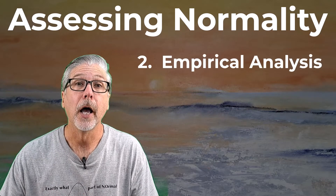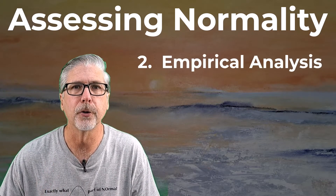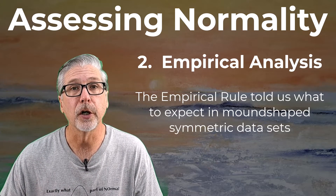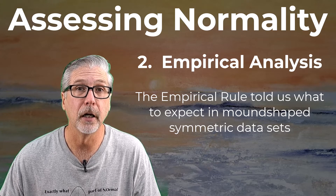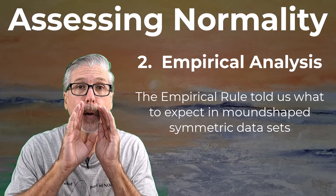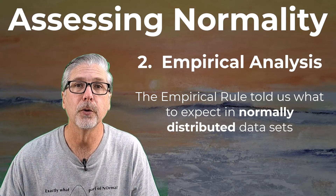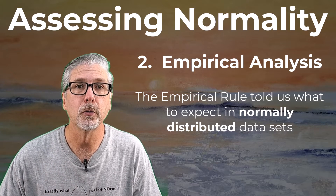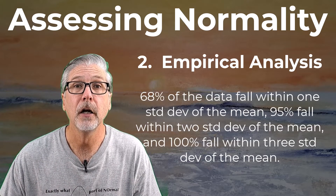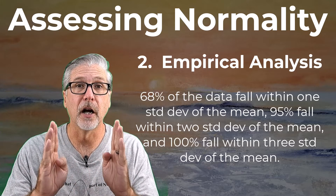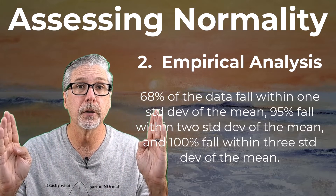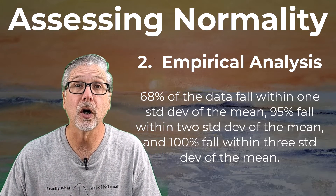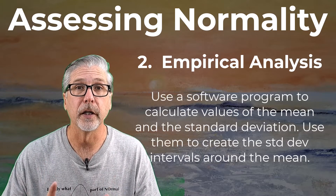Number two is something I'm going to call an empirical analysis. Remember the empirical rule? Earlier, we took a look at something called the empirical rule that was appropriate to use when working with mound-shaped symmetric data — our really sneaky way of saying normal distribution. The empirical rule was our first look, or baby step, into the normal curve. It said that approximately 68% of the data fell within one standard deviation of the mean, approximately 95% fell within two, and approximately 100% fell within three. We're going to use that to our advantage now.